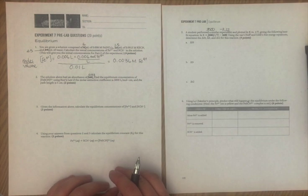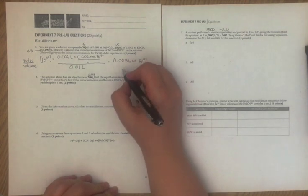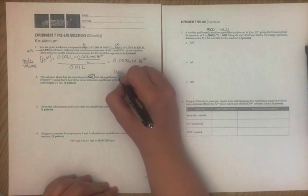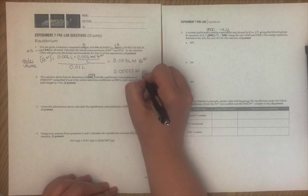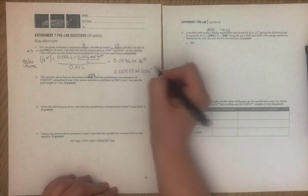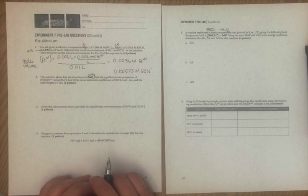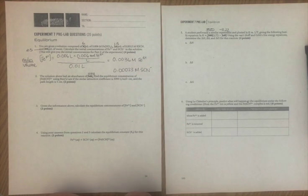You would do the same thing for thiocyanate. If you did that, you should get 0.00023 molar thiocyanate. And you could also, of course, express these in scientific notation. I'm going to just leave them as they are.